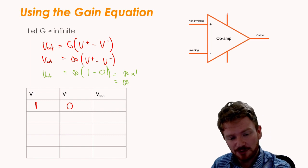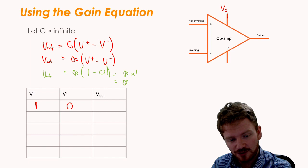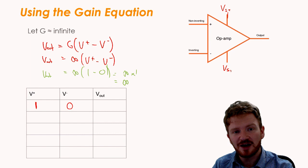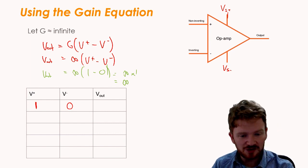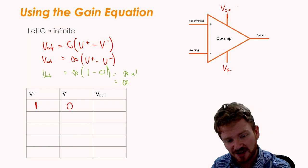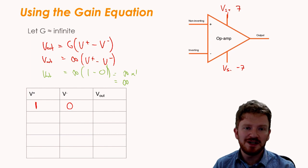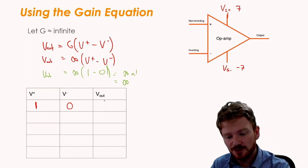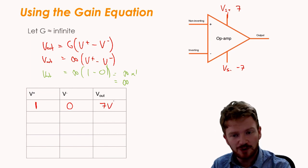This is where it becomes really important to understand that we have, remember, Vs. We have Vs+ and Vs-, the supply voltages. So if I say that my supply voltages are, say, 7 volts and minus 7 volts, then the most that my output can ever be is 7. So in this case, rather than being plus infinity, it will just be 7 volts.